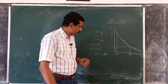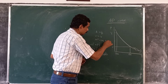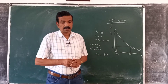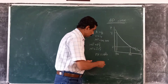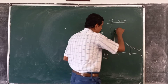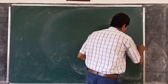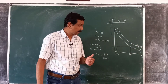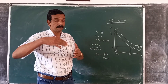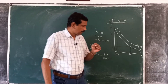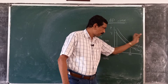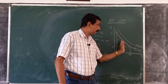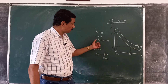Now suppose that money supply increases to 400. For either equation to be satisfied, PY must equal 1600. This is shown by another aggregate demand schedule AD2(400), with different combinations of P and Y. As you can see, if there is an increase in the supply of money, the aggregate demand curve will shift towards the right. One aggregate demand curve is drawn for a particular level of money supply.